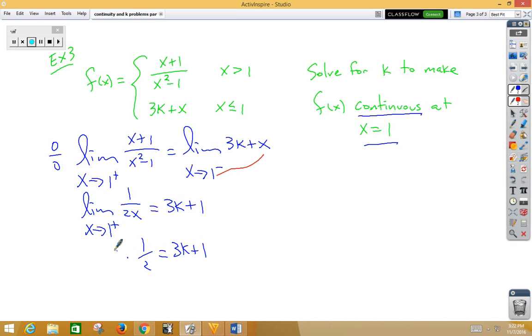If we're uncomfortable with our fractions, let's just go ahead and kill the fraction on the first step. We get 1 is equal to 6k plus 2.